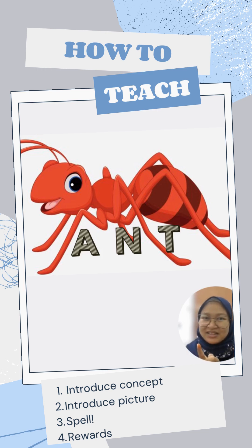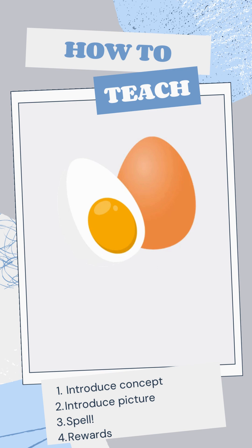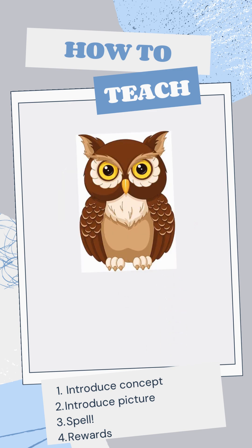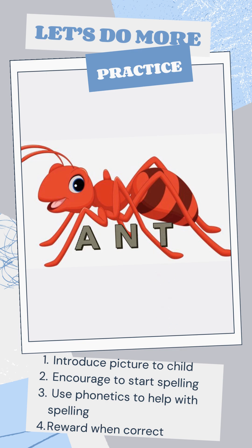Now let us do other words and other pictures. Let's practice again — what picture is this? Correct, it's ants! How do we spell ants? Good job! You can get your reward.